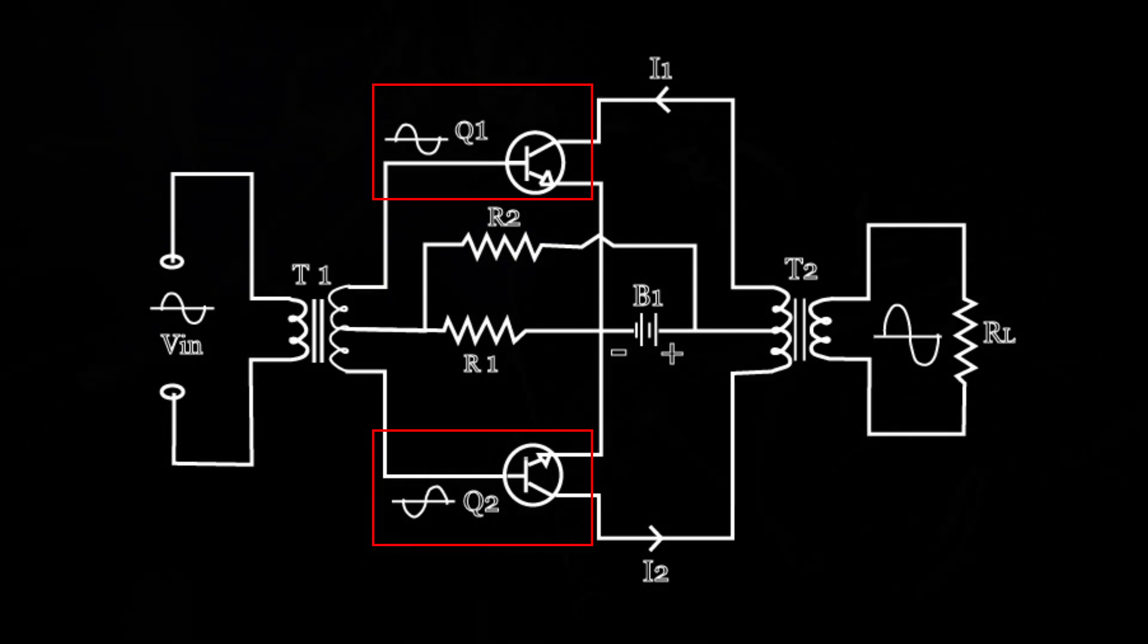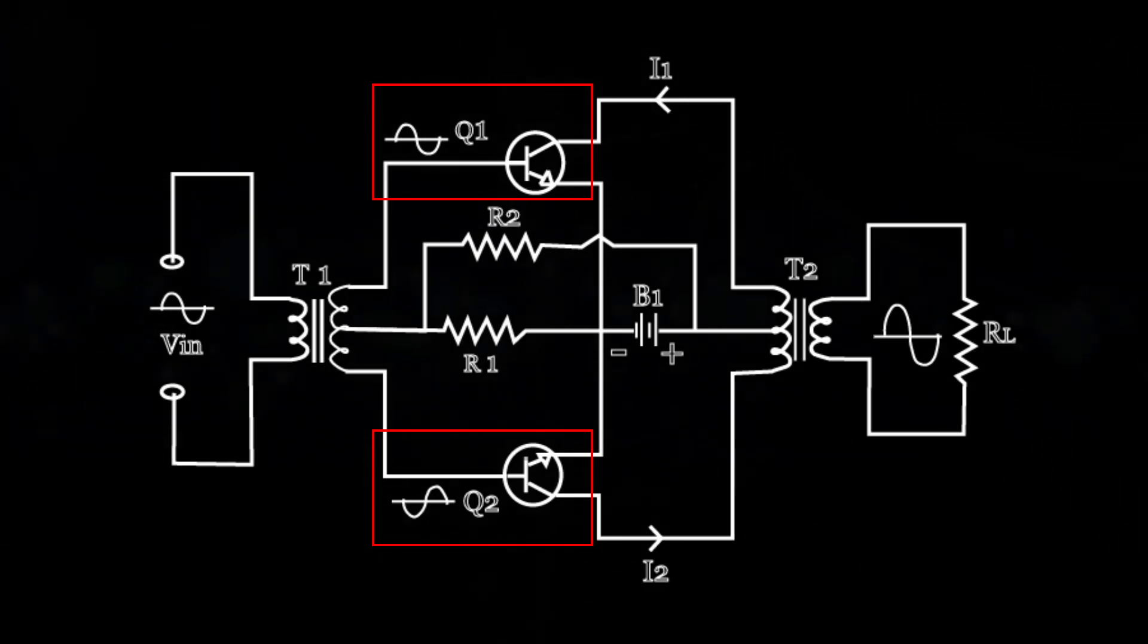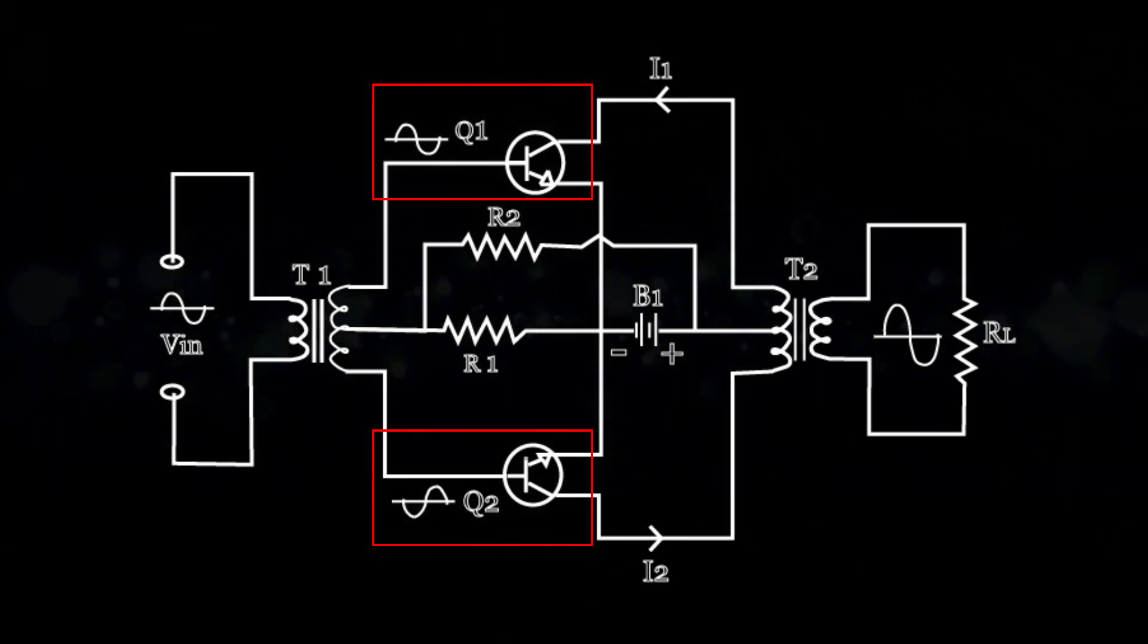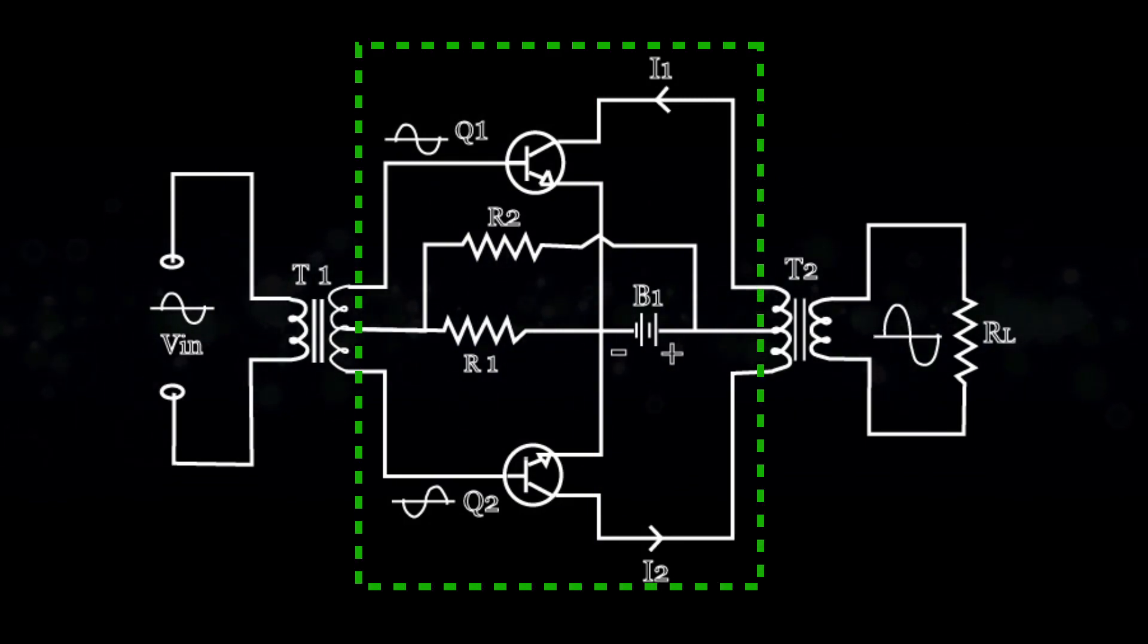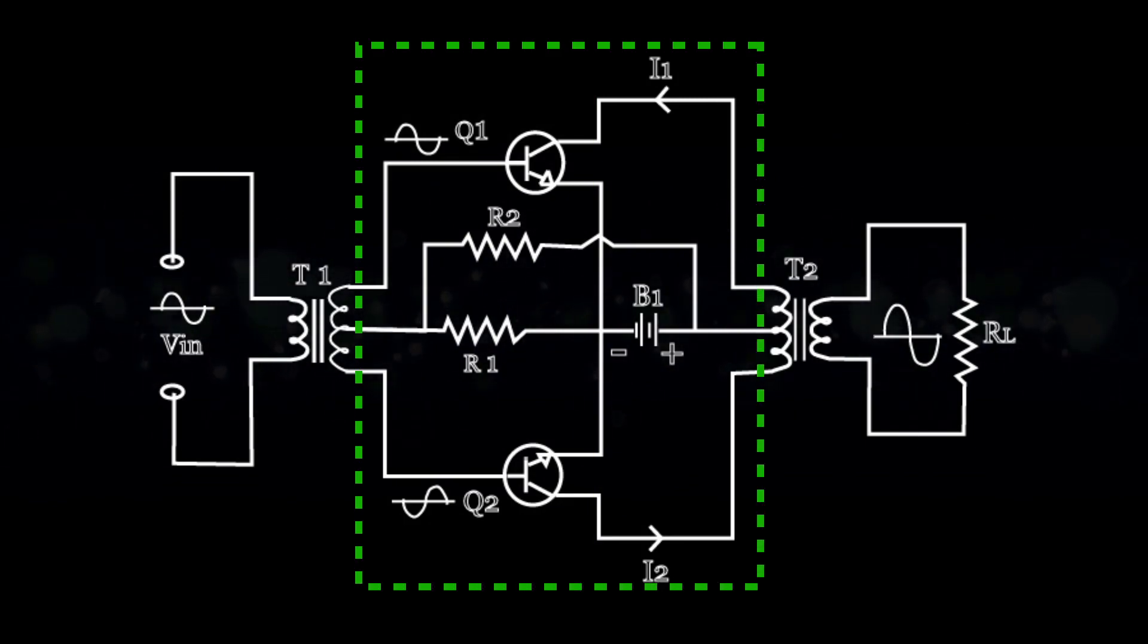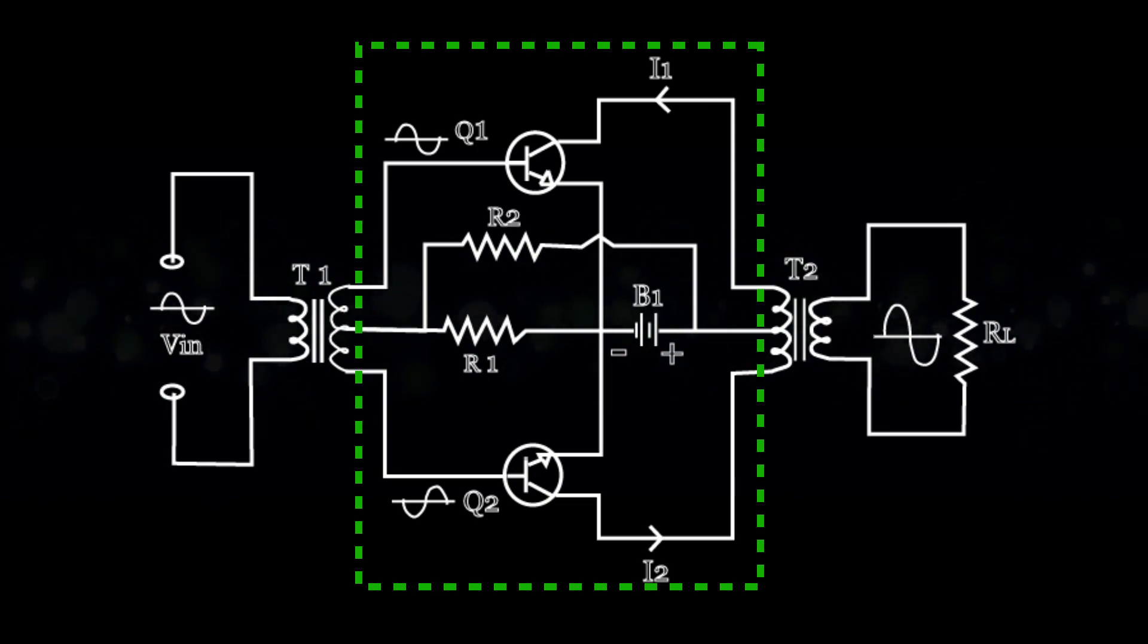At the same time, Q2 is driven negative using the first half of its input signal and so the collector current of Q2 decreases. The collector currents of Q1 and Q2, that is I1 and I2, flow in the same direction through the corresponding halves of the T2 primary.